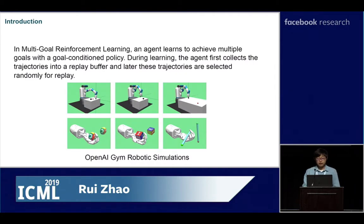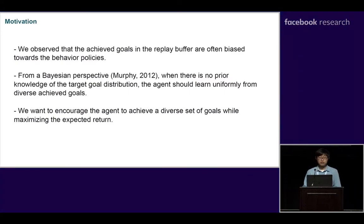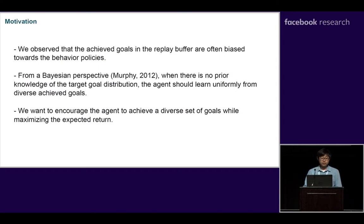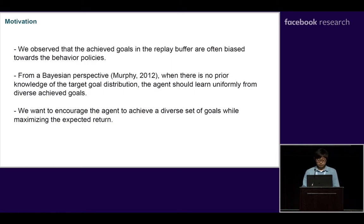In Multi-Goal Reinforcement Learning, the agent learns to achieve multiple goals with a goal-conditioned policy. During learning, the agent collects trajectories into the replay buffer and those trajectories are later selected randomly for replay. However, we observed that the achieved goals in the replay buffer are often biased towards the behavior policies. From a Bayesian perspective, when there is no prior knowledge about the target goal distribution, the agent should learn uniformly from a diverse set of goals.